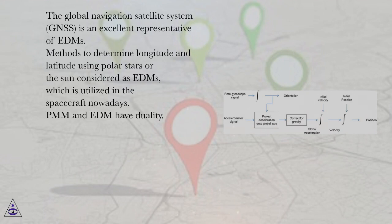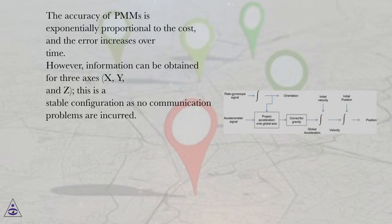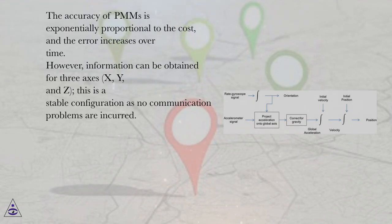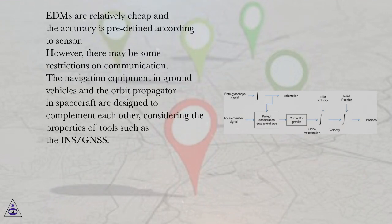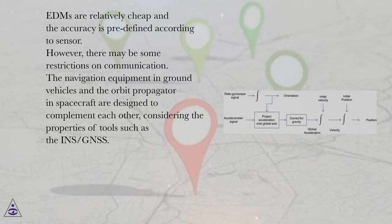PMM and EDM have duality. The accuracy of PMMs is exponentially proportional to the cost, and the error increases over time. However, information can be obtained for three axes — X, Y, and Z — which is a stable configuration as no communication problems are incurred. EDMs are relatively cheap and the accuracy is predefined according to sensor; however, there may be some restrictions on communication. The navigation equipment in ground vehicles and the orbit propagator in spacecraft are designed to complement each other, considering the properties of tools such as the INS-GNSS.